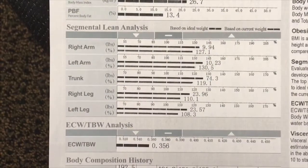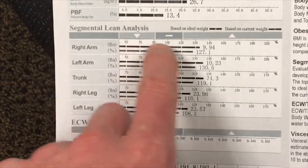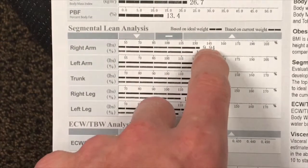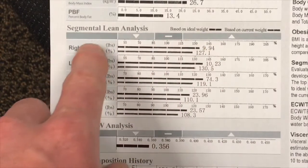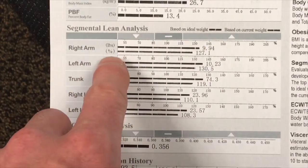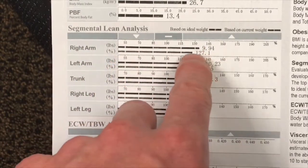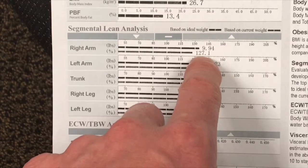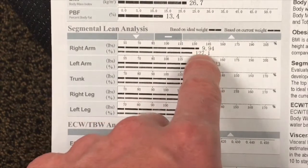Getting a little more in-depth into the segmental lean analysis, again we can see the poundage value here on the top — 9.94 pounds of lean mass in that right arm. But if we look down here, the percentage is saying 127.1, so it's a little bit confusing there.